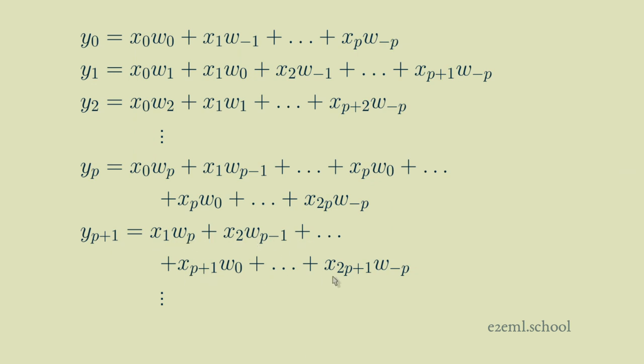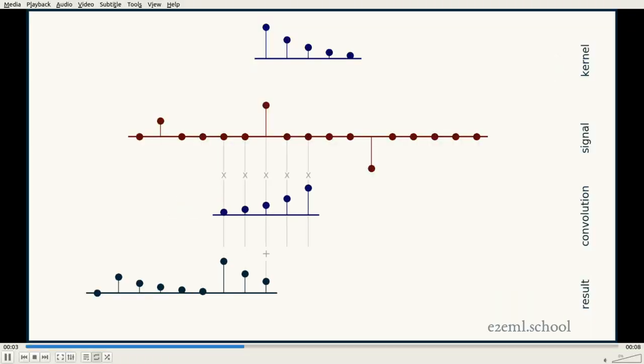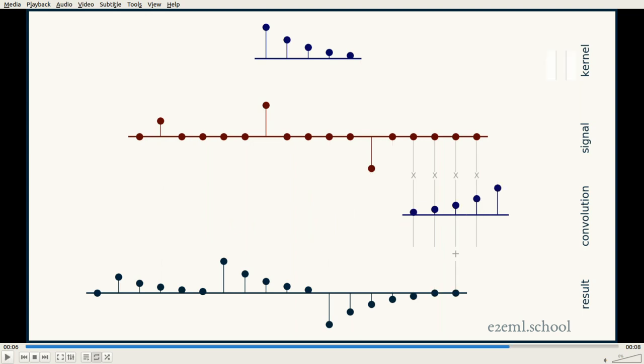And when we get to the far end, we do the same thing that we did at the beginning. Any portion of the kernel that extends past the end of the signal just gets treated like it's lined up with zeros. So each of those kernel elements get multiplied by zero, so we can ignore them.